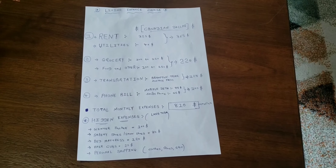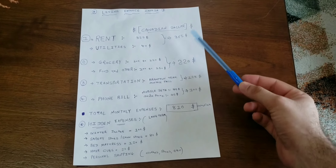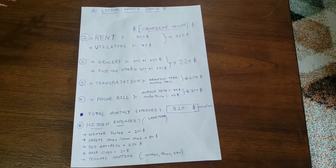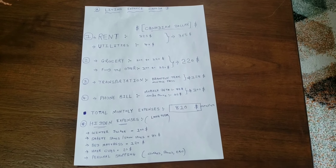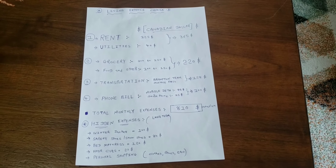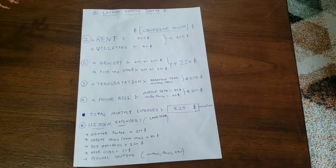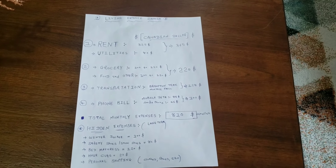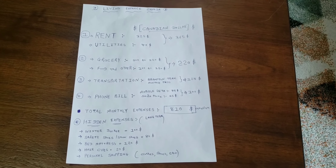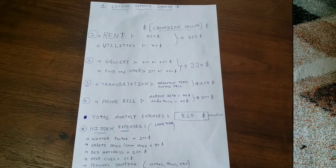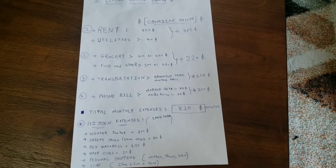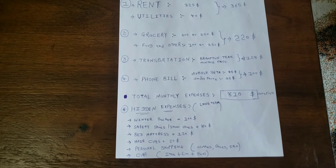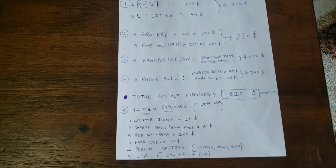Here is an overview of your monthly living expenses in Canada. Rent and utilities per head: $325 plus $40, totalling $365. Grocery and food including eating out: around $220 monthly. Transportation monthly pass: $128. Phone bill with mobile data and latest smartphone: $100 with taxes. Total monthly expenses come to around $813 at minimum. Every person has a different way of living, so it will vary from person to person, but this is the minimum you are facing every month.